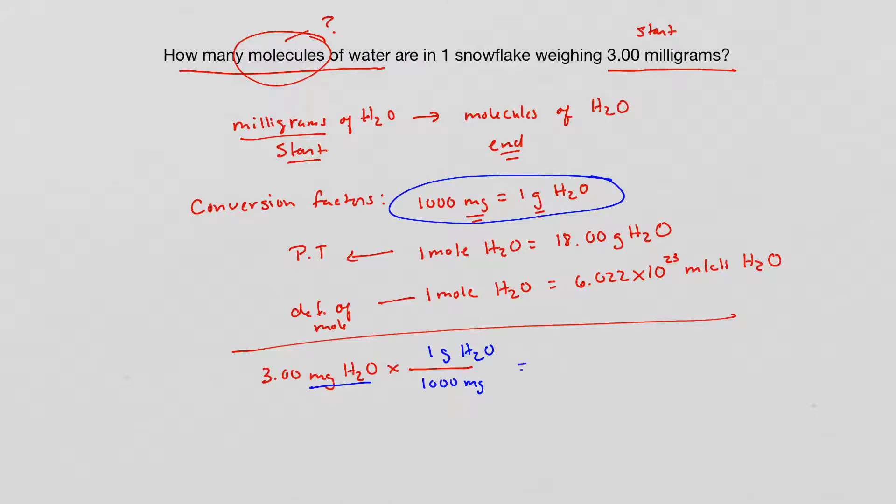Now if I were to stop here, I would have to take three divided by 1000 and that would give me 0.003. I'm going to tack on sig figs just for the fun of it. And that's grams of water.